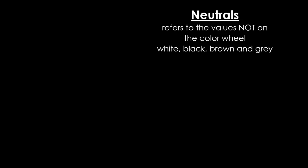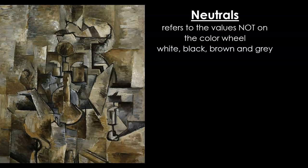Neutrals refer to the values not on the color wheel, such as white, black, brown, and gray. In this composition by Georges Braque, we can see that none of these colors are listed on the color wheel.